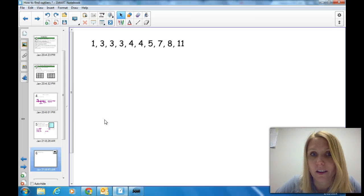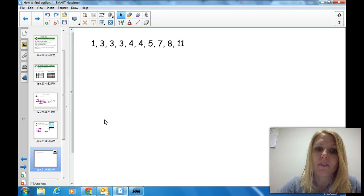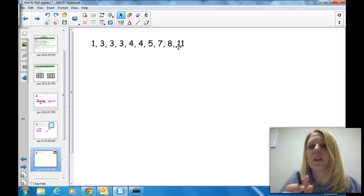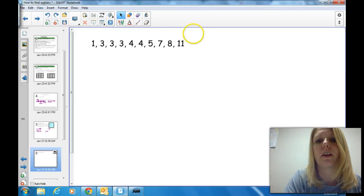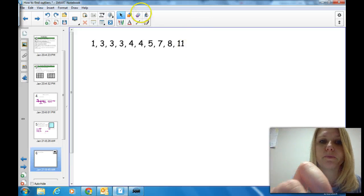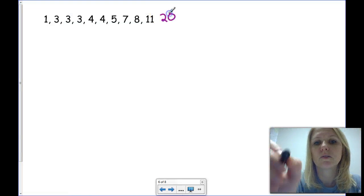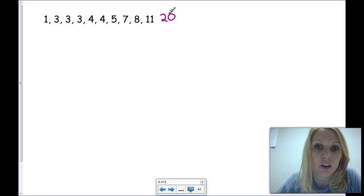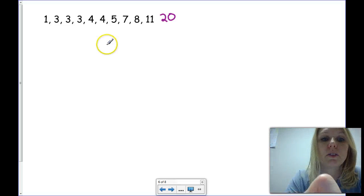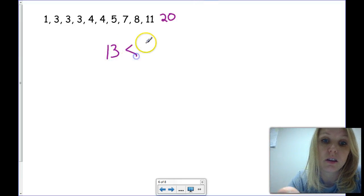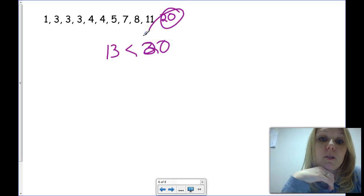So, let's look back at our data again. Here we have on the screen all of our data. But, what if we happen to have this weird one that's really way out there. Let's say it's a 20. Earlier, we saw that our upper quartile boundary was at a 13. Well, clearly, 20 is greater than 13. So, 20 would be considered an outlier.